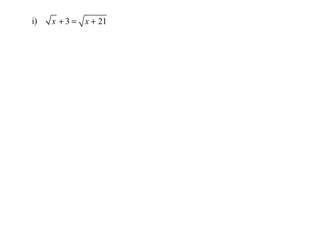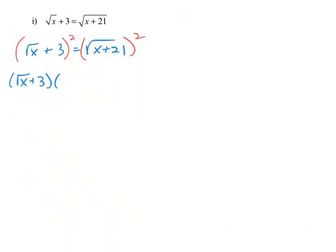In example i, we have another radical equation with a radical on the left and a radical on the right. The one on the right is already isolated, so we square both sides. Squaring a binomial means setting it up as a binomial times a binomial and using FOIL: the first gives the square root of x times the square root of x, which is x; the outer and inner each give plus 3 radical x, combining to plus 6 radical x; and the last gives plus 9. So the left side becomes x plus 6 radical x plus 9, and squaring the right side gives x plus 21.